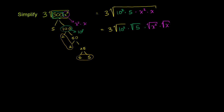Now we can simplify these things. The principal root of 10 squared, or the principal root of 100, is going to be positive 10. Negative 10 squared is also 100, but when you take the principal root you only care about the positive square root, so this is 10. And 5 is not a perfect square, so we'll just leave this expression as the square root of 5.